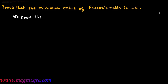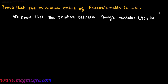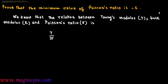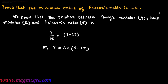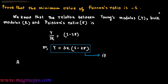We know that the relation between Young's modulus, bulk modulus, and Poisson's ratio is: Y divided by 3K equals 1 minus 2 sigma, or Y equals 3K into (1 minus 2 sigma). This is equation 1, where Y is Young's modulus, K is bulk modulus, and sigma is Poisson's ratio.